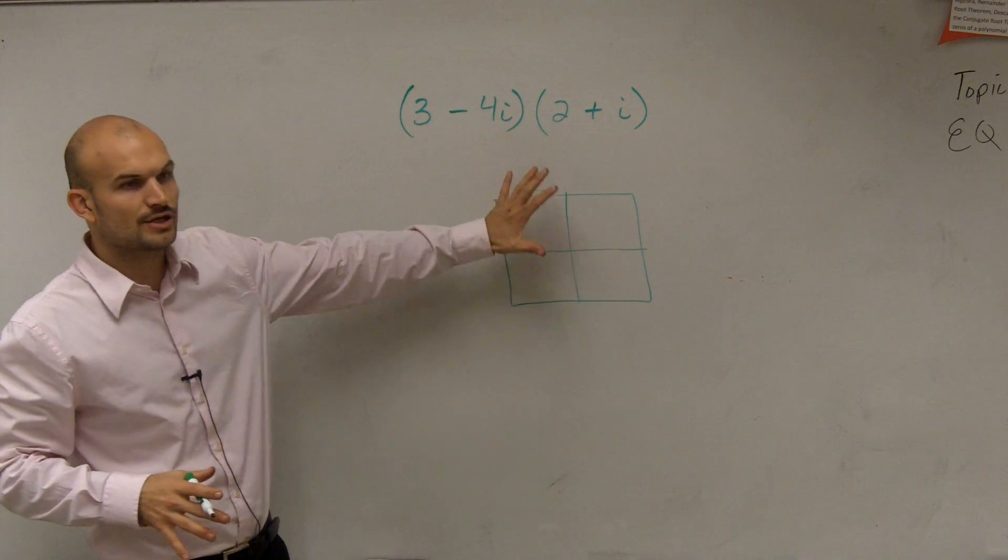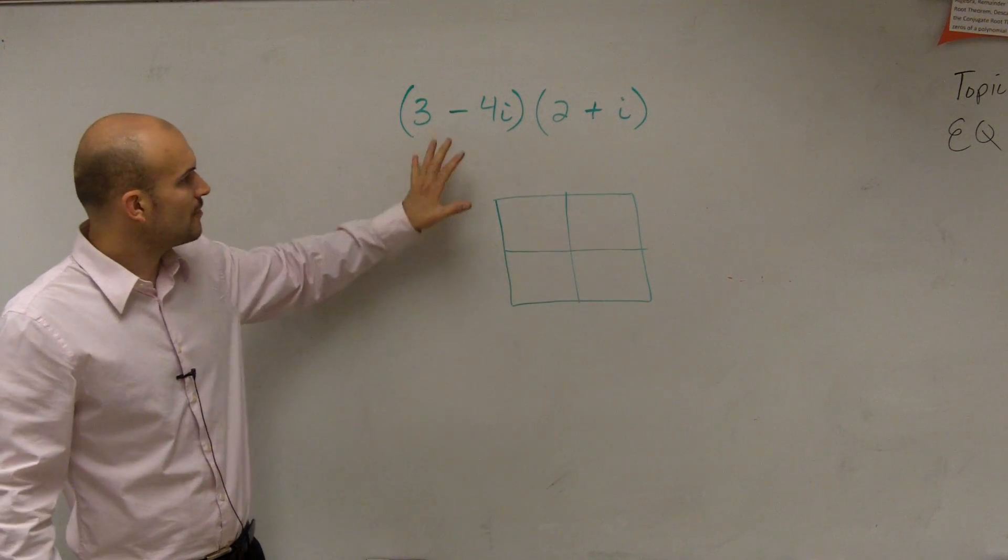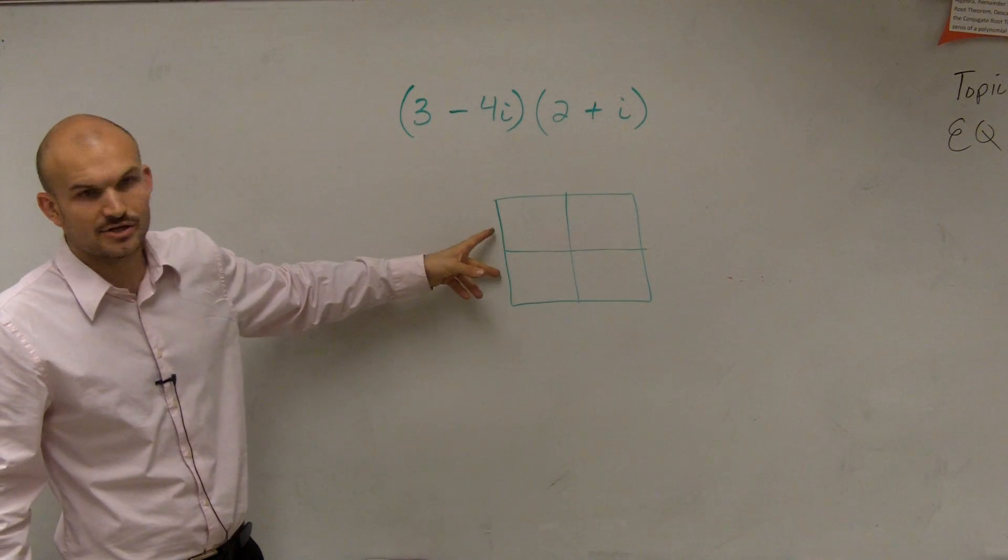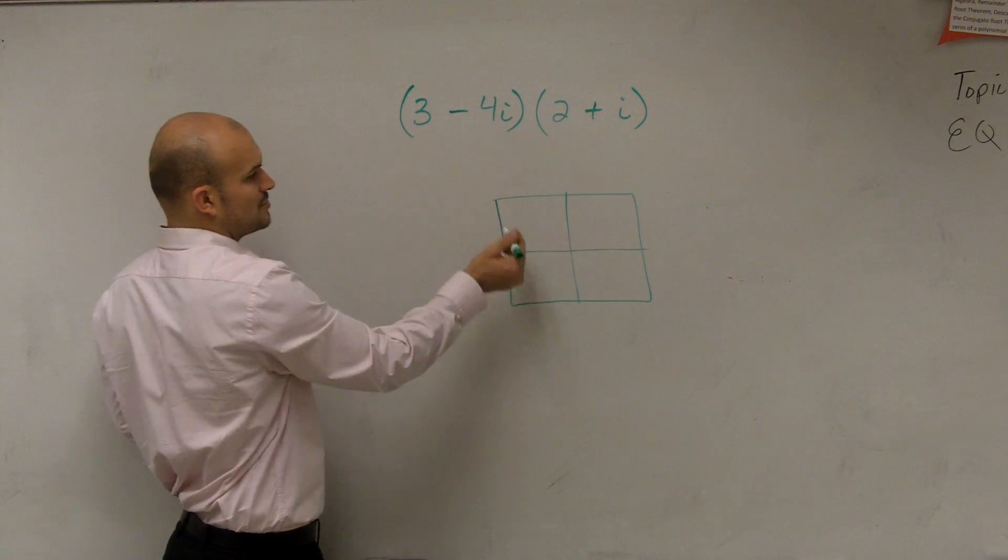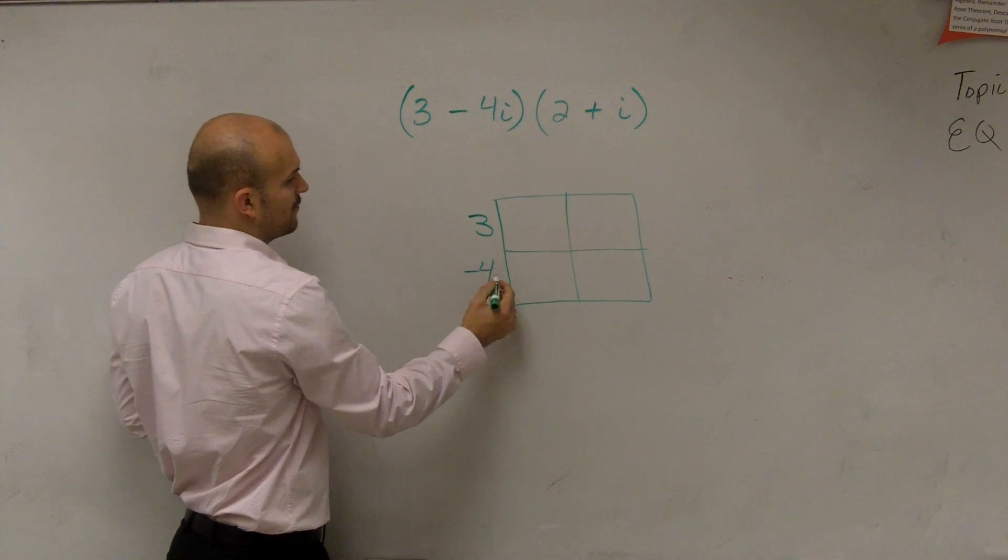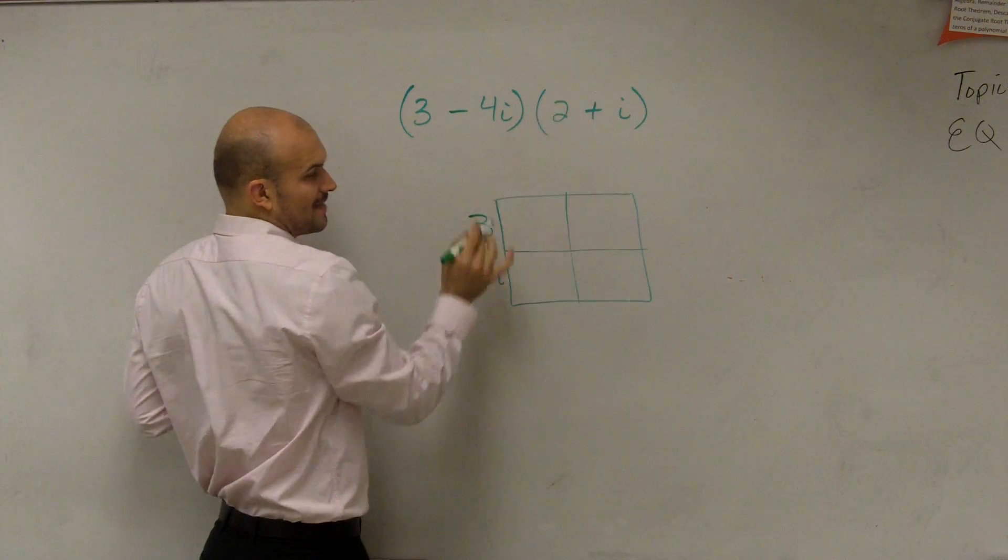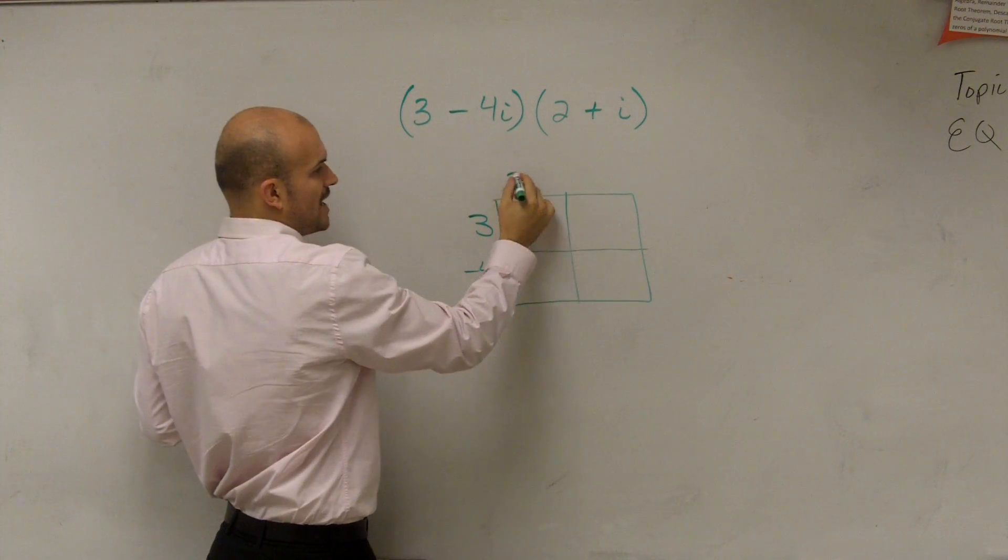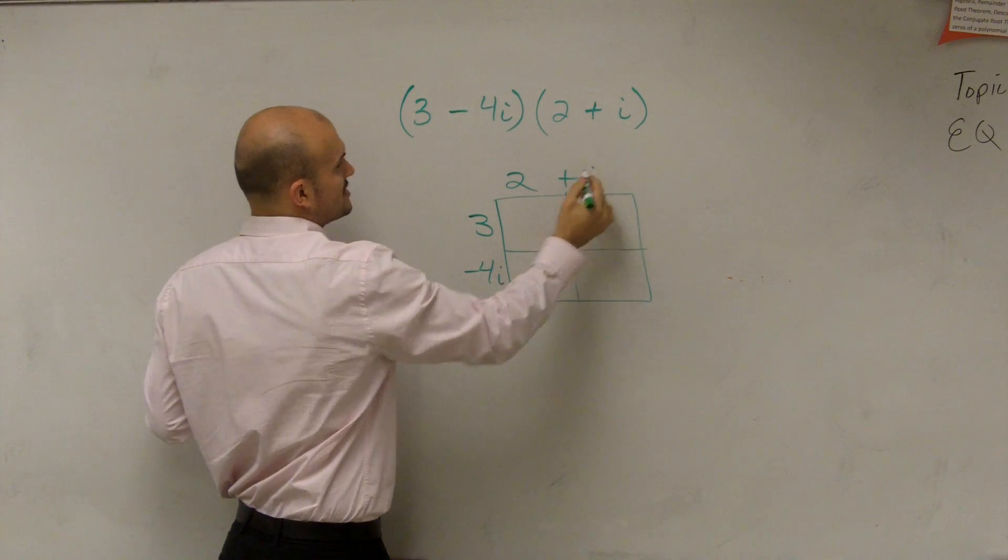What you do is create a box. For how many terms you have, that's how many boxes you make on one side. Since I have two terms, I split it into halves. So I have 3 minus 4i. And this one has two terms, so I break that up into halves. I have 2 plus i.